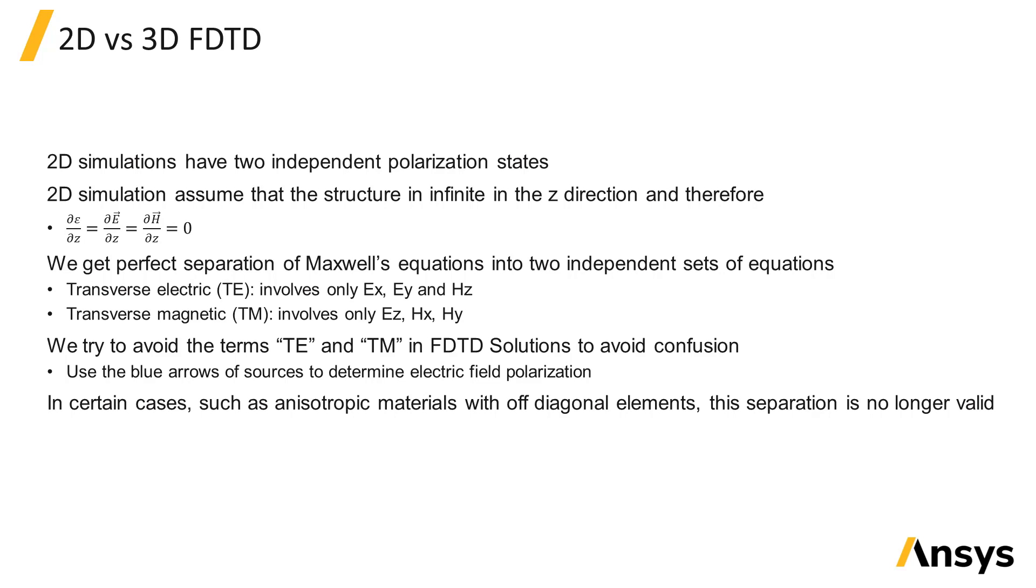Because 2D FDTD simulations make the assumption that the structure is infinite in the Z dimension, we know that the permittivity and fields are the same for all values of Z. This allows us to separate Maxwell's equations into two independent polarization states, often called transverse electric, or TE, with fields EX, EY, and HZ,